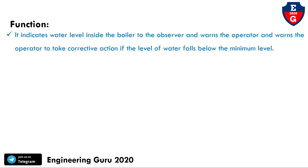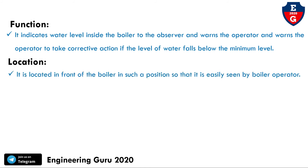The function of the water level indicator is to indicate the water level inside the boiler to the observer, enabling the operator to take corrective action if the water level falls below the minimum level. The main function is to maintain and display the level to the observer. Regarding location, it is located at the front of the boiler so that it is easily seen by the boiler operator.